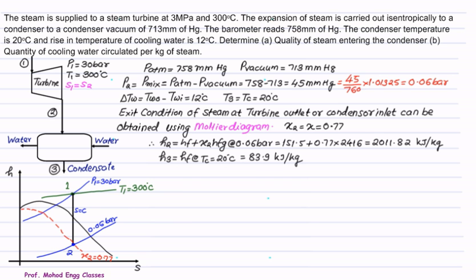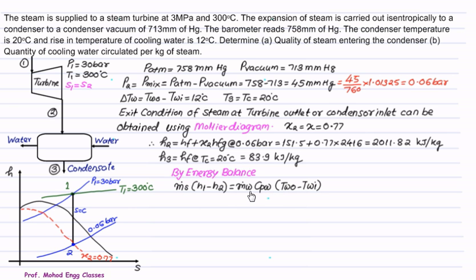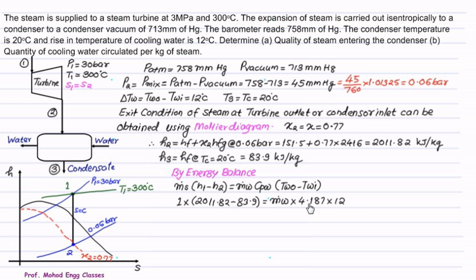Performing the energy balance: heat rejected by steam equals heat gained by cooling water, so Ṁs(H1 − H2) = Ṁw · CPw · (TWO − TWI). Setting Ṁs = 1 kg, H1 = 2011.82 kJ/kg, H2 = 83.9 kJ/kg, CPw = 4.187 kJ/kg·K, and temperature rise = 12°C, we solve to get mass of cooling water = 38.37 kg per kg of steam, approximately 40 kg per kg of steam.